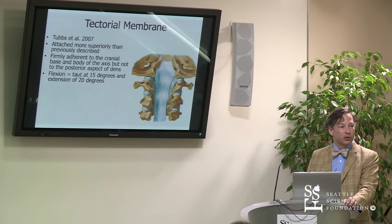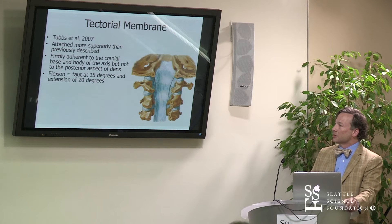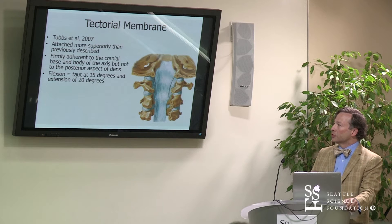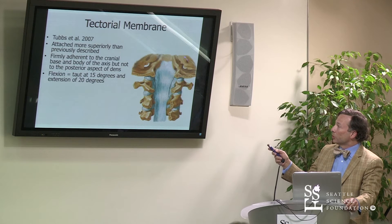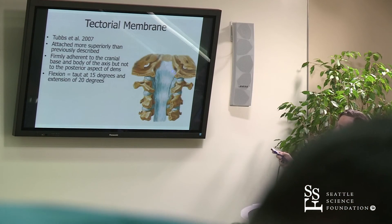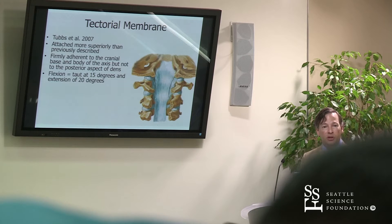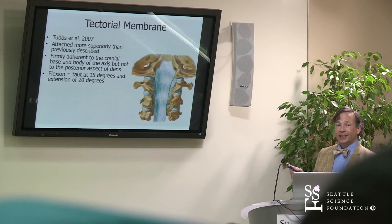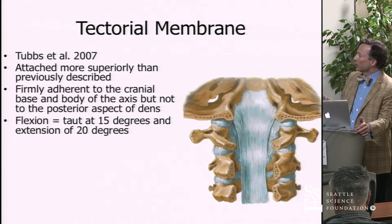The tectorial membrane we looked at in 2007. Some highlights of that study: we found that it attaches much more superiorly than what you'll find in any detailed atlas or description of this ligament. It attaches as far up as the point where your internal auditory meatus would be located, versus the depiction that shows it somewhat lower on the clivus. It tended to fan out a little bit more, and if you peeled it back, you'd note — and this has never been described before — that the tectorial membrane is very adherent to the back of the body of the atlas but has no adherence to the odontoid, which functionally is intuitive but had not been discussed before. This ligament becomes taut at about 15 degrees of flexion and an equal amount in extension.